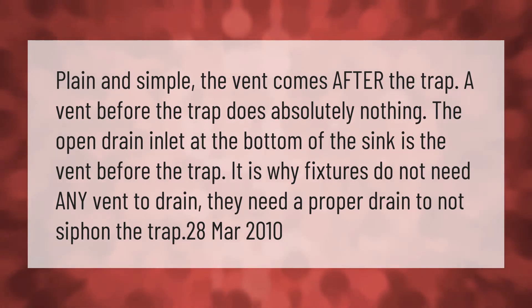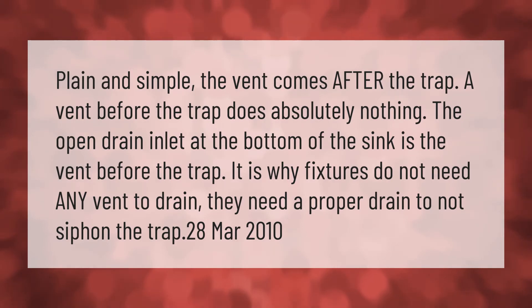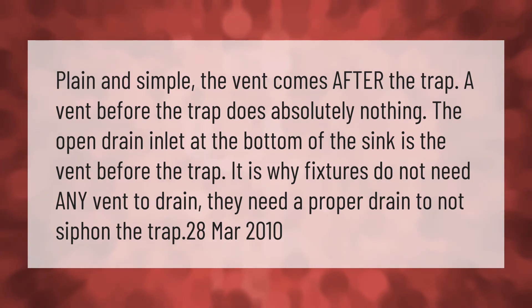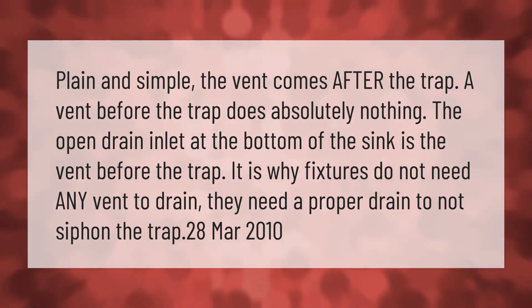The vent comes after the trap — a vent before the trap does absolutely nothing. The open drain inlet at the bottom of the sink is the vent before the trap. This is why fixtures do not need any vent to drain; they need a proper drain to not siphon the trap.